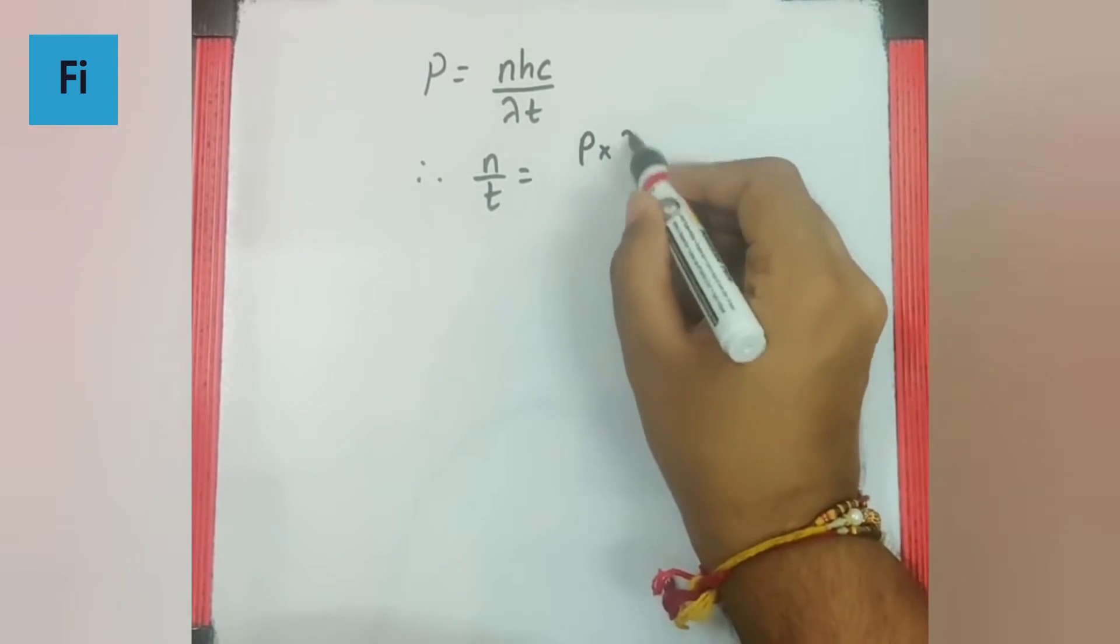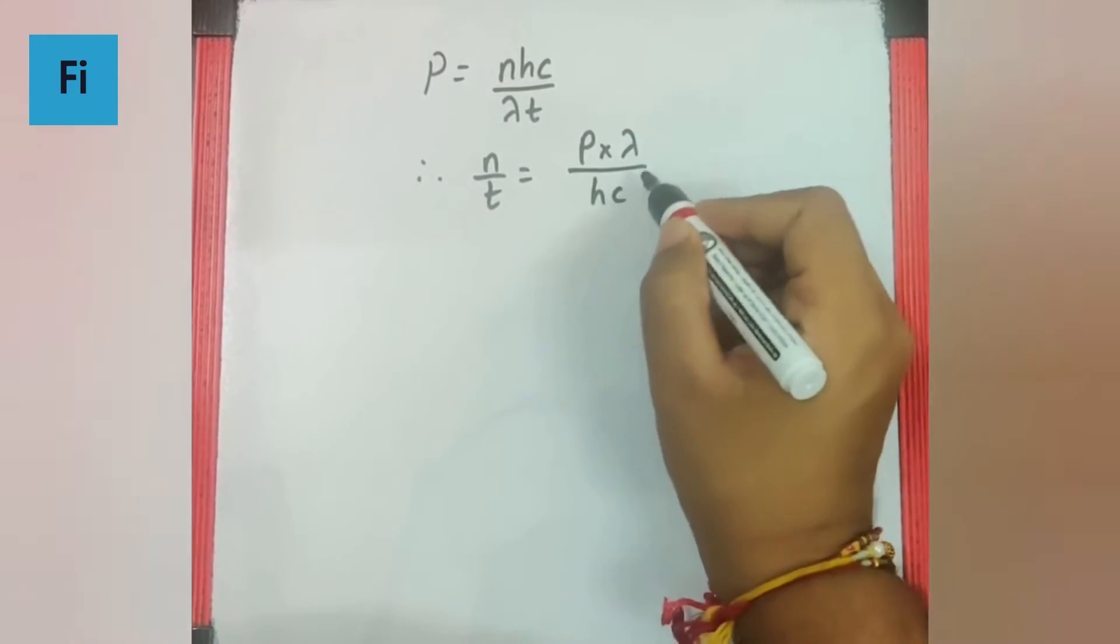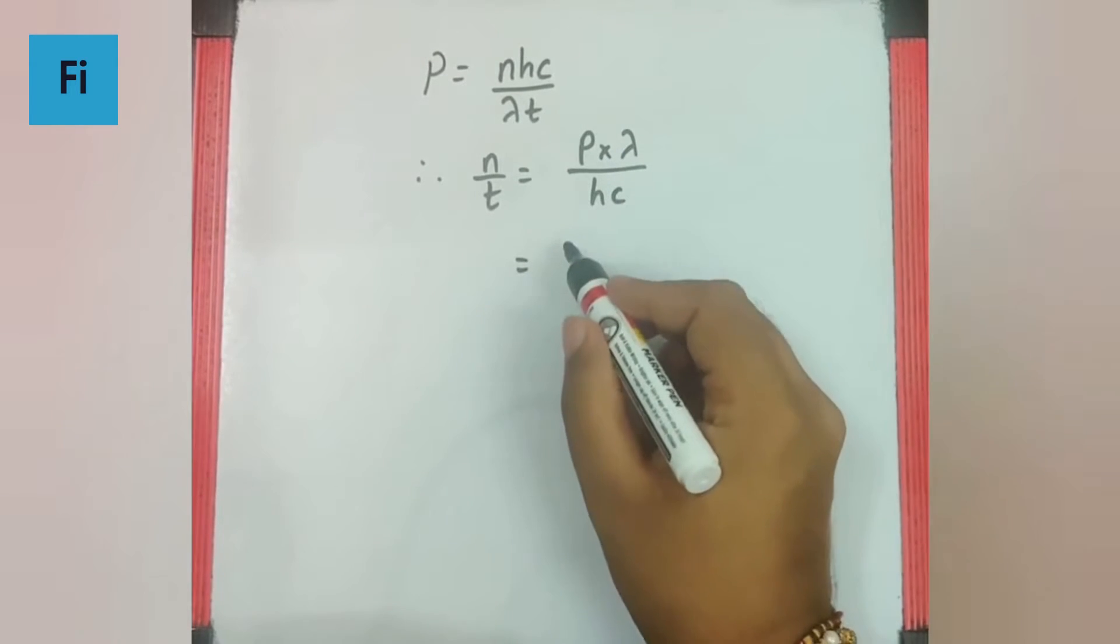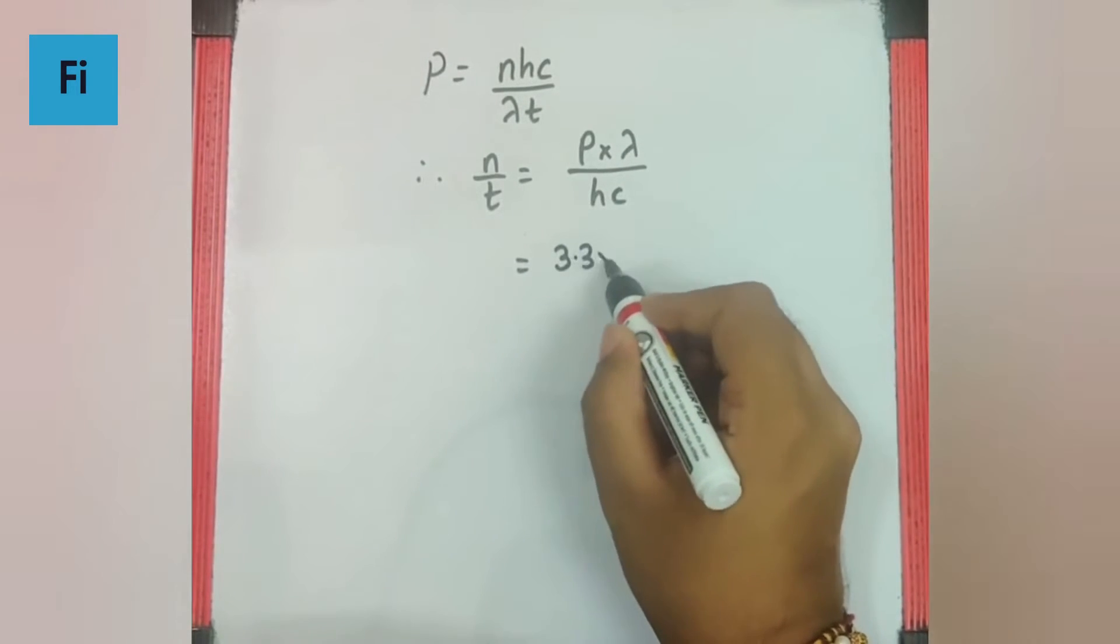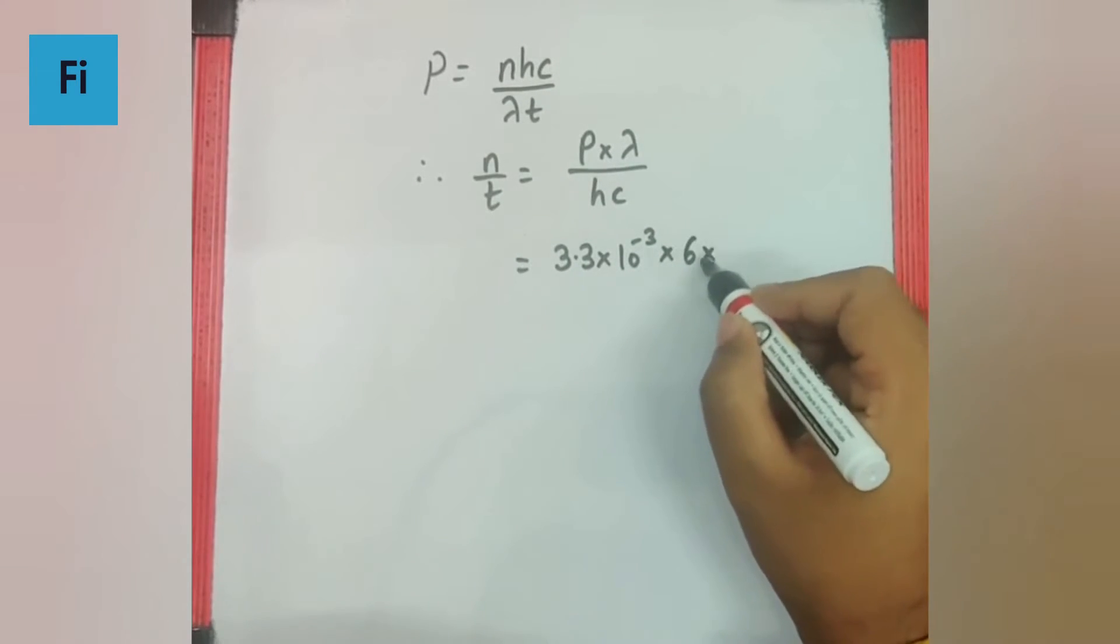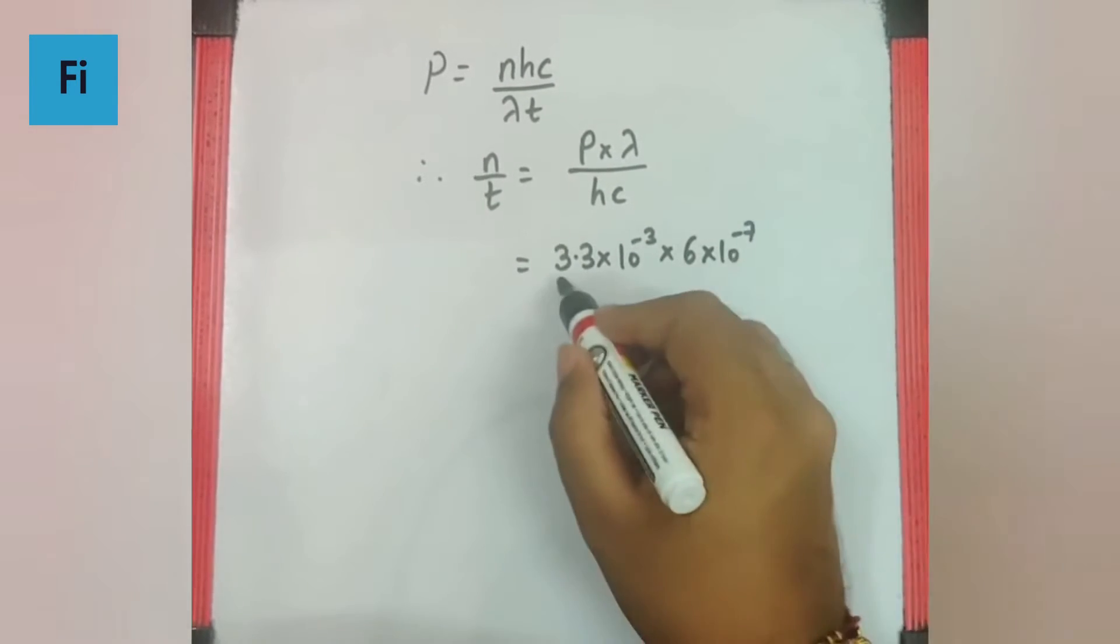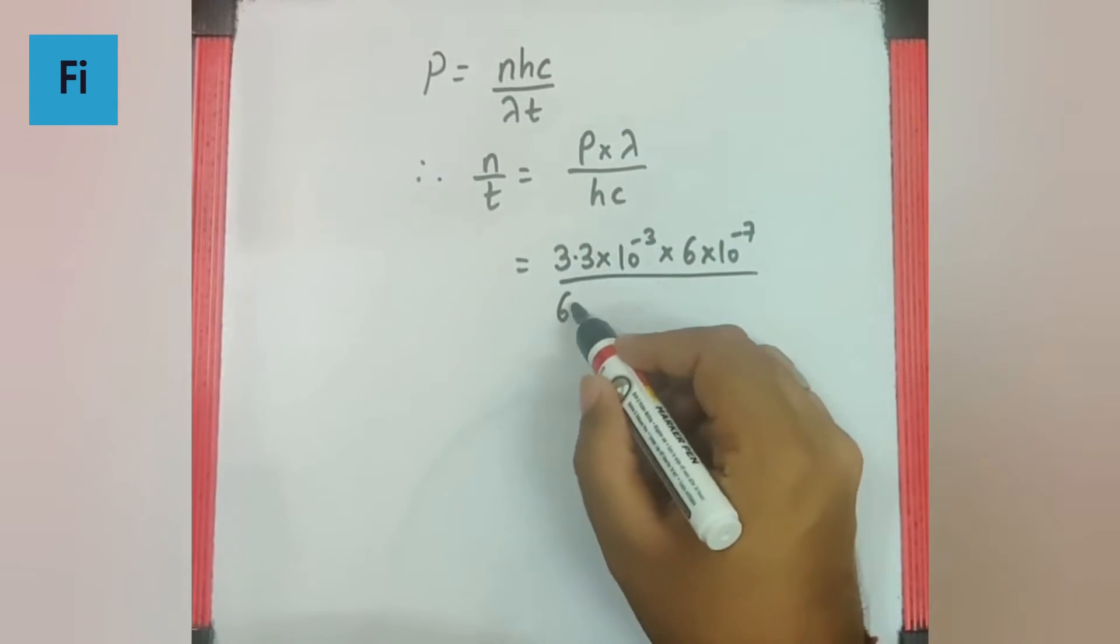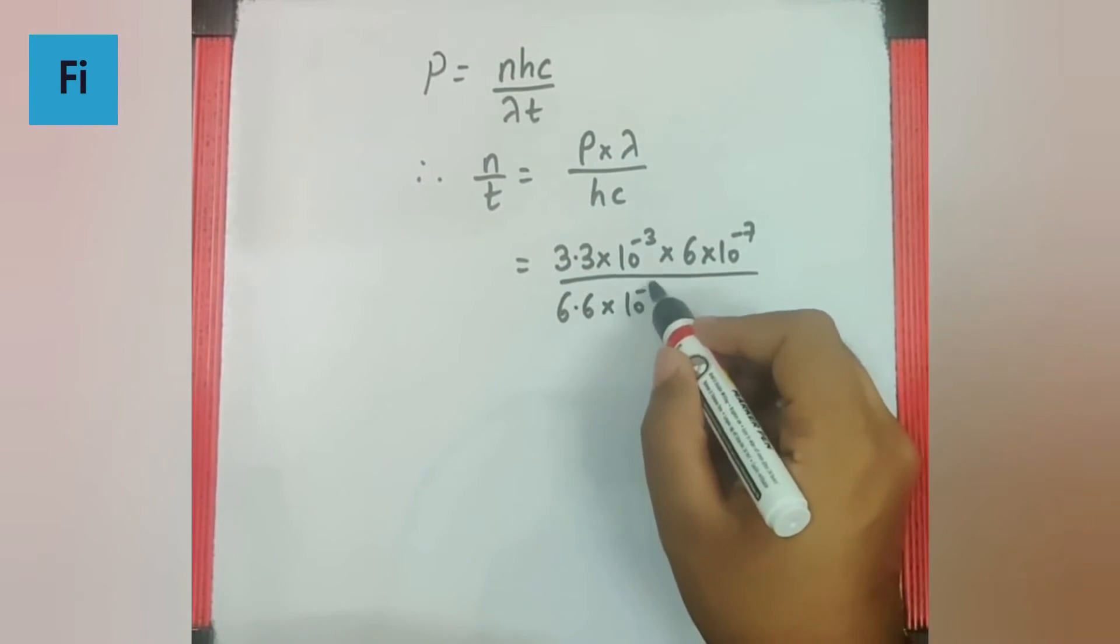So power given is 3.3 × 10^-3, lambda is given as 600 nanometers, that is 6 × 10^-7, h is given as 6.6 × 10^-34.